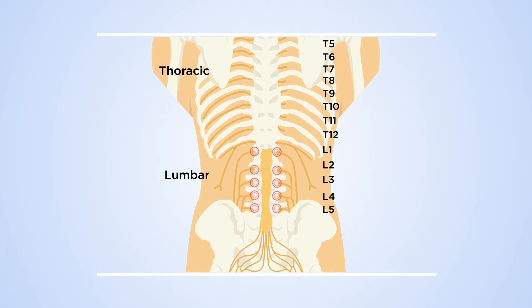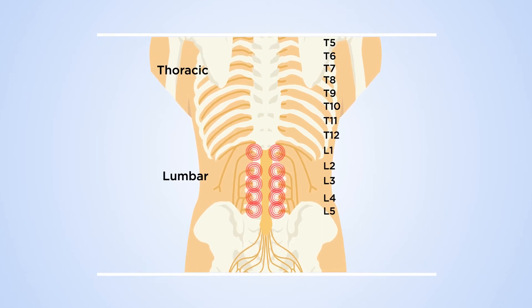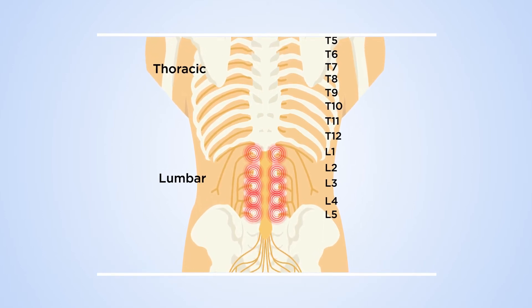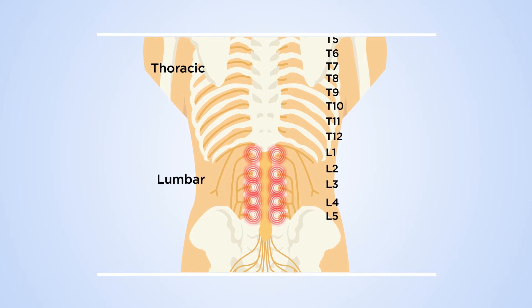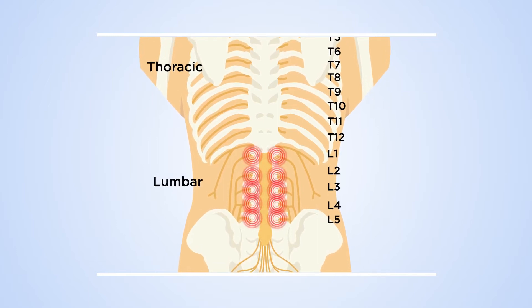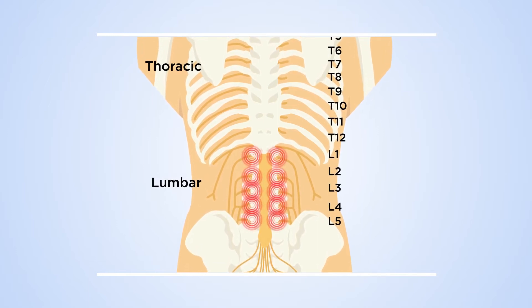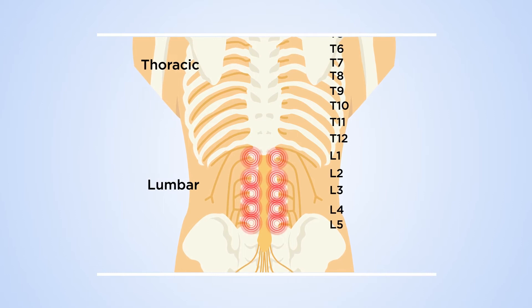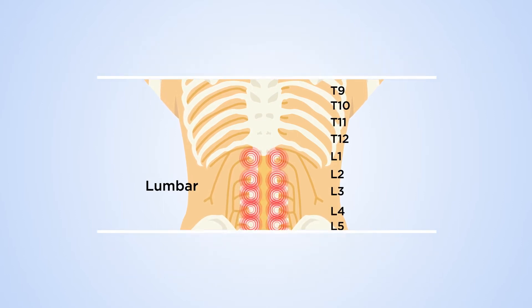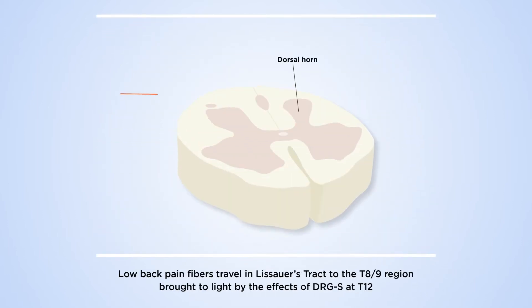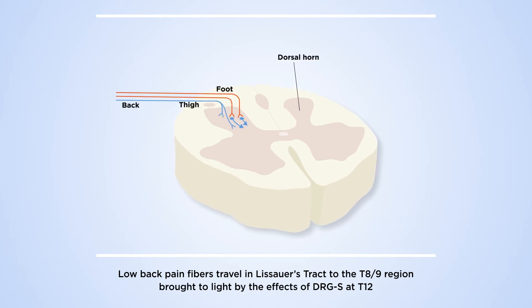The lumbar spine is innervated by multiple nerve branches at each level. The lumbar discs and vertebral bodies are innervated through the sympathetic nerves, which converge at the L2 level. Synapses in the dorsal horn are organized with the medial portion receiving distal input and the lateral portion receiving proximal or truncal fibers.